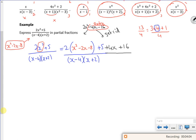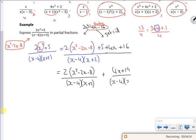Right then. So now what I've got is 2 lots of the bottom line, if I split it up, over the bottom line, because the bottom line is just that bit at the top, plus I've got 4x plus 19 over what's on the bottom line. So are we happy that the x squared minus 2x minus 8 is the same as x minus 4, x plus 2. So what I've got is 2 plus 4x plus 19 over x minus 4, x plus 2.